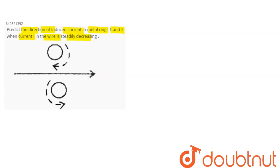So we can see here by the right-hand thumb rule, the magnetic field in ring 1 — this is ring 1, suppose this is ring 2. Here we can see the magnetic field in ring 1 is a dot, that is coming out, and in ring 2 the magnetic field is a cross, that is going inside.